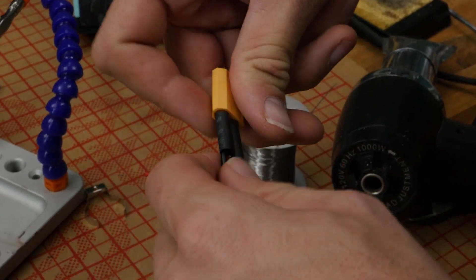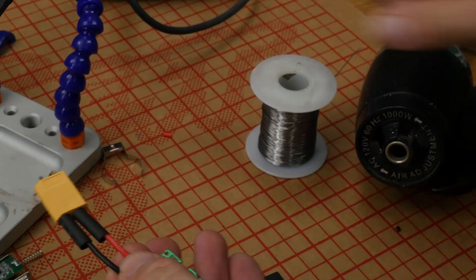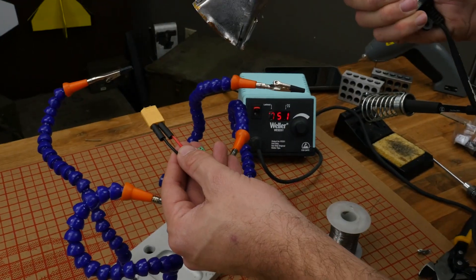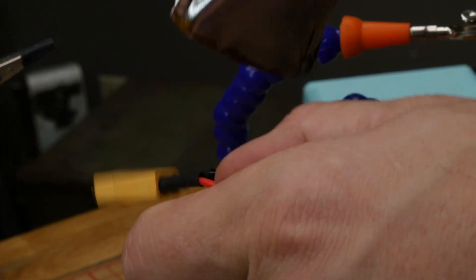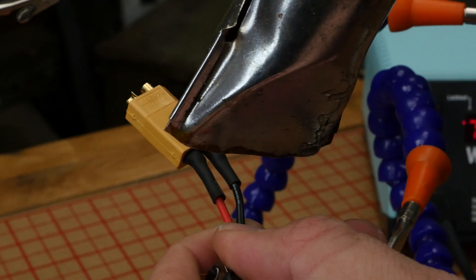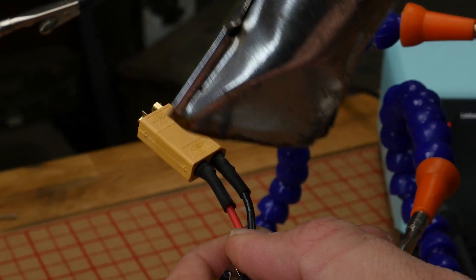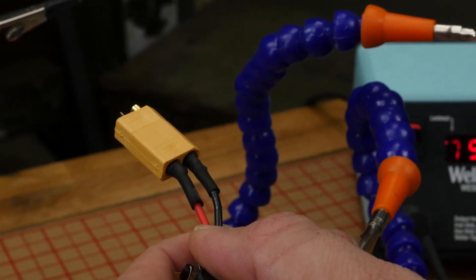Once we're happy with our ends, we can slide our tubing over. If you don't have a heat gun, don't worry. You can use a lighter, but make sure you wave it back and forth. Do not burn yourself and don't burn the insulation. And shrink it down.